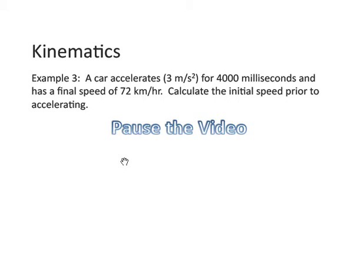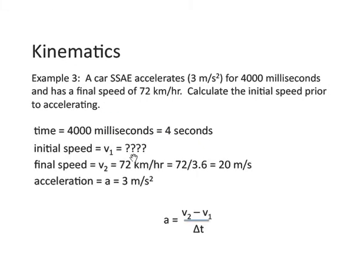Let's look at example 3. A car accelerates for 4,000 milliseconds and has a final speed of 72 kilometers per hour. Calculate the initial speed prior to accelerating. Please pause the video and try this out. Alright. Hopefully you tried this question. Here's the solution. Time. I always like to give my students time in units other than seconds. You have to be aware of converting the units. In this case, 4,000 milliseconds is 4 seconds because remember, 1,000 milliseconds is 1 second. We're looking for the initial speed. That's V1. Once again, I give you a speed that's not in meters per second, in kilometers per hour and we have to convert so that our units are consistent. 20 meters per second is the final speed here which is 72 kilometers an hour and we're given our acceleration which is 3 meters per second per second or 3 meters per second squared.